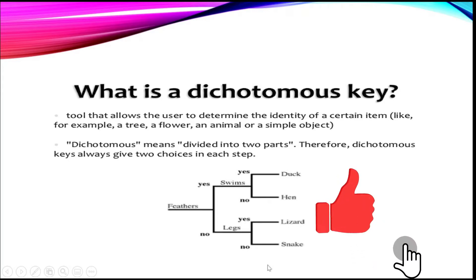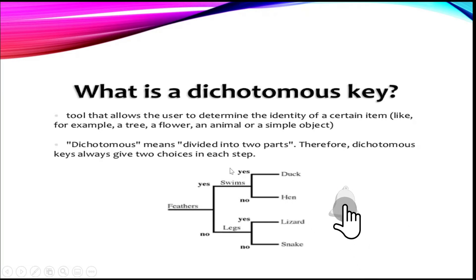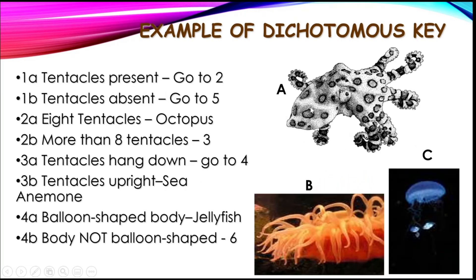This is one structure that the dichotomous key may take. Here is another example: we have organisms A, B, and C to identify using this key. We start with question 1A — tentacles present? Let's say we would like to identify organism A. Tentacles present? Yes. So go to 2, and we jump to 2A.